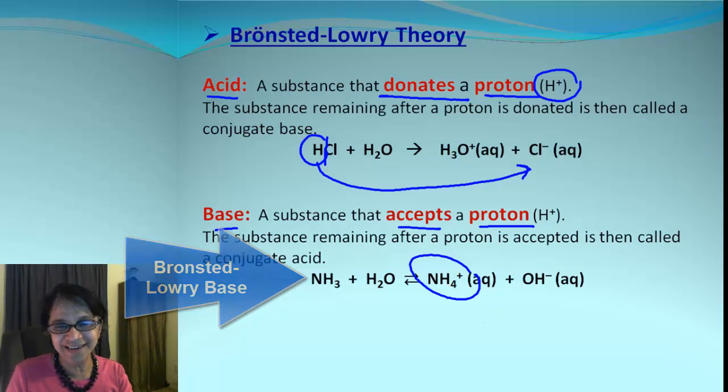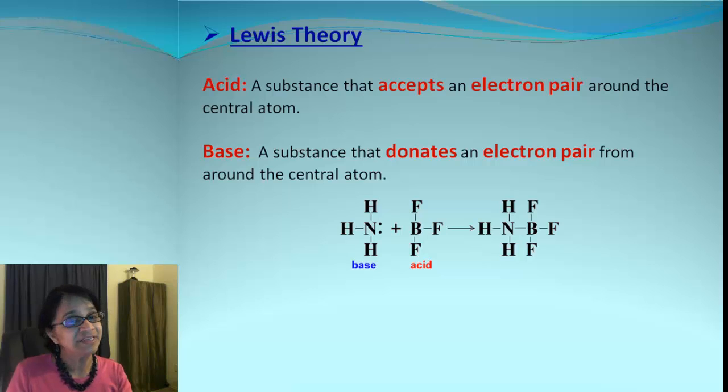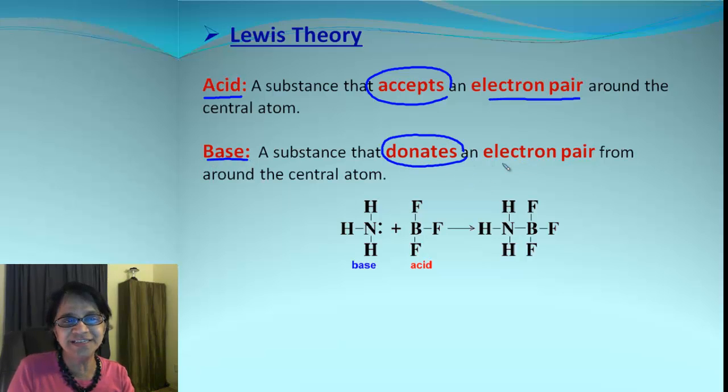Now there is one more theory which is Lewis theory, and this takes electron for help in explaining acids and bases. So an acid is the one which will be accepting electron pair around of course the central atom, and a base is the one which will be donating electron pair.